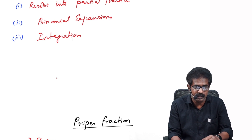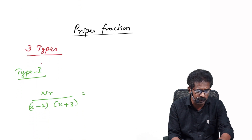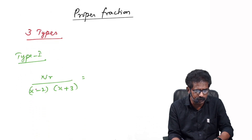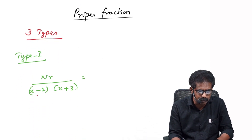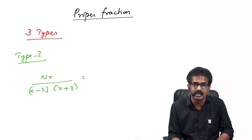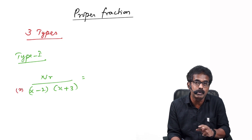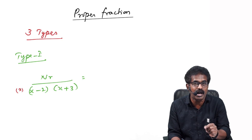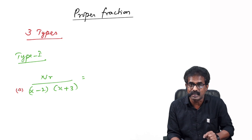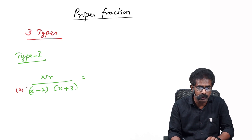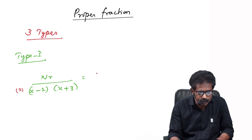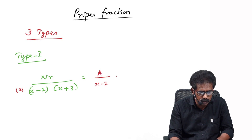In proper fractions there are three types. The first type is where the denominator consists of linear factors — for example, (x−2)(x+3). The numerator's degree must be less than 2, so it may be a constant or a degree-1 term. This can be written as A/(x−2) plus B/(x+3).